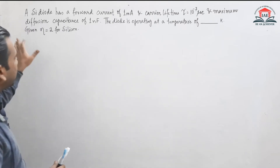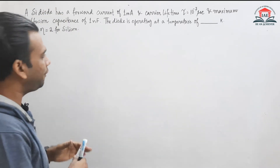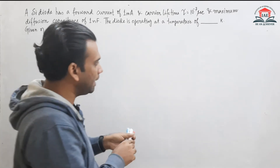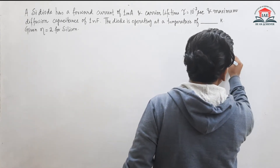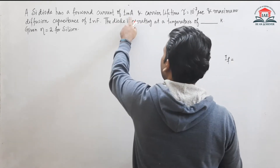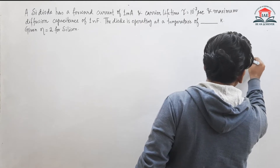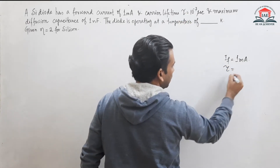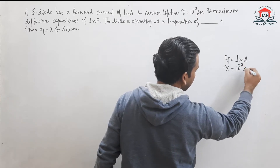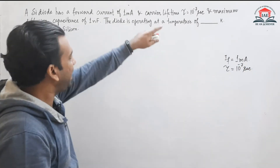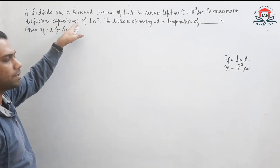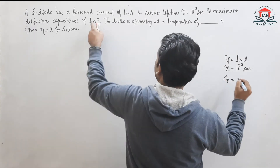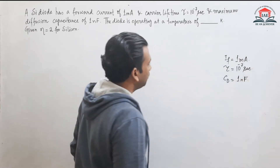Let us first jot down the information given. The forward current IF is 1 milliampere. The carrier lifetime tau is 10 to the power minus 7 seconds. The diffusion capacitance CD is 1 nanofarad.